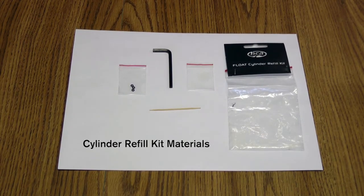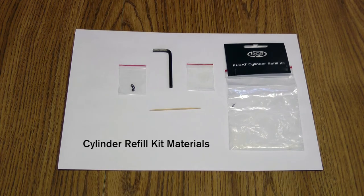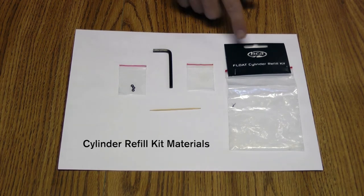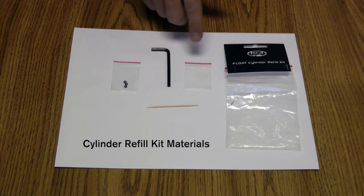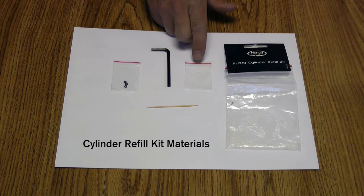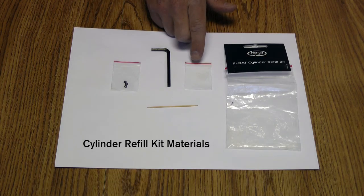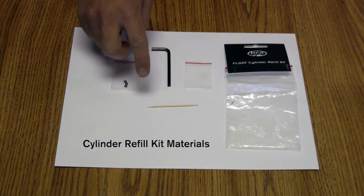We at Backcountry Access recommend deploying your cylinder at least once every year. For this reason, we have included our cylinder refill kit which includes three valve stem o-rings, an allen wrench, some vacuum grease which is specific for high altitudes and low temperatures, and a toothpick.